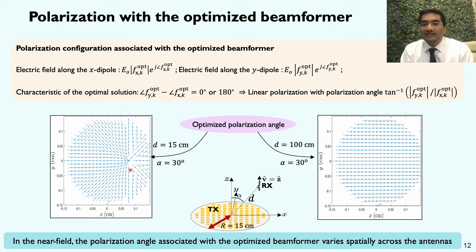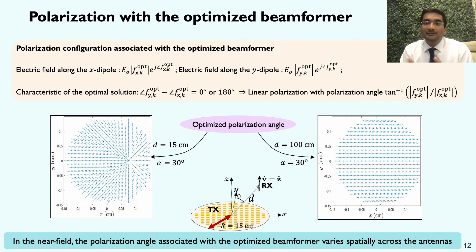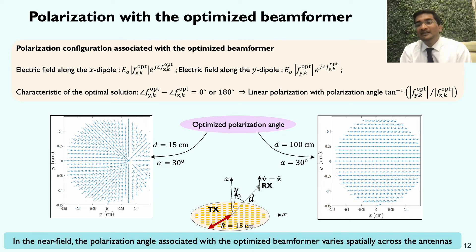A quiver plot of the polarization angle associated with the optimized beamformer shows that the optimal polarization angle varies across the antenna array. This only happens in the near field regime, where the distance is smaller than the Fraunhofer distance 2D²/λ. At larger distances of about 1 meter in the far field regime, the optimal polarization angle is almost constant across the entire array. This spatial variation in the optimum polarization configuration at shorter distances clearly motivates the need for DPC phased arrays in near field communication, since standard phased arrays cannot change the polarization angle across different antenna elements.